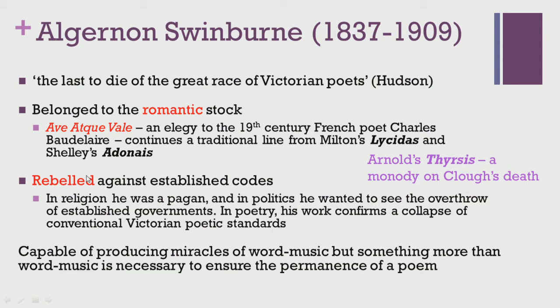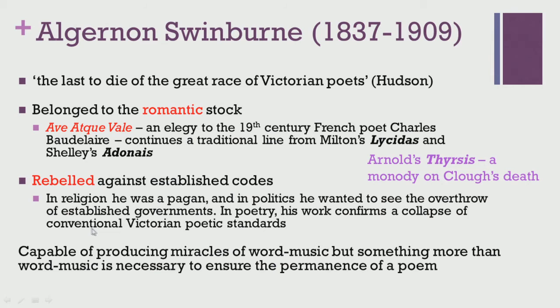It is useful to remember that many celebrated writers of this period wrote mournful or elegiac poems in memory of the death of a favourite friend or fellow colleague. In that sense, it is also useful to remember that Arnold, one of the other Victorian poets, had written an elegy upon the death of his poet friend Clough, titled Thyrsis.